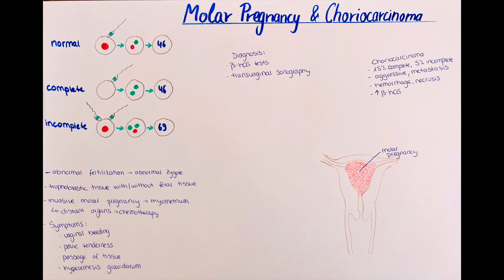A molar pregnancy could theoretically develop in any event of fertilization, but there are a few risk factors increasing its chance. Those are having had a prior molar pregnancy or a history of miscarriage, having family members that experienced a molar pregnancy, or a pregnancy occurring in patients 15 years and younger or 35 years and older.